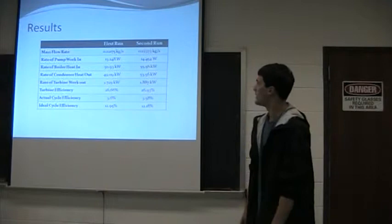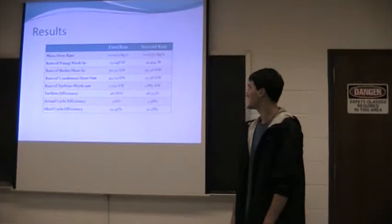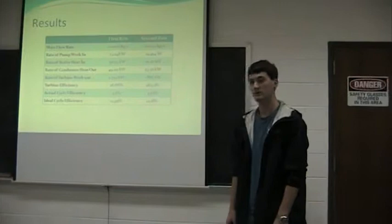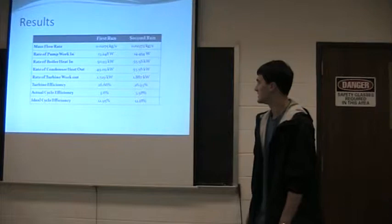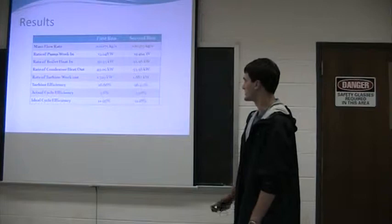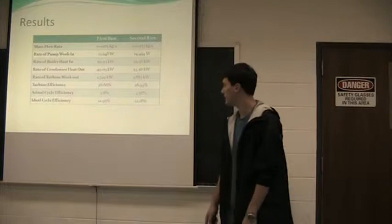And then the pump work in was 13 watts. The boiler heat in was 51 kilowatts. The rate of the condenser heat out was 49 kilowatts. The rate of the turbine work out was about 1,729 watts. And then my efficiencies, which was the main part of this lab, the turbine was about 26 percent, which I thought was really well for the turbine.